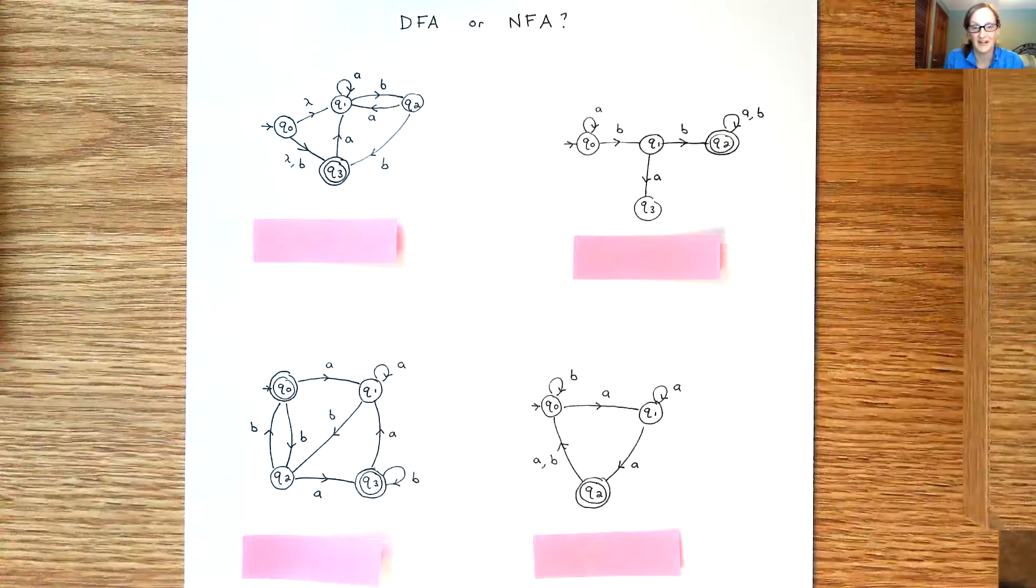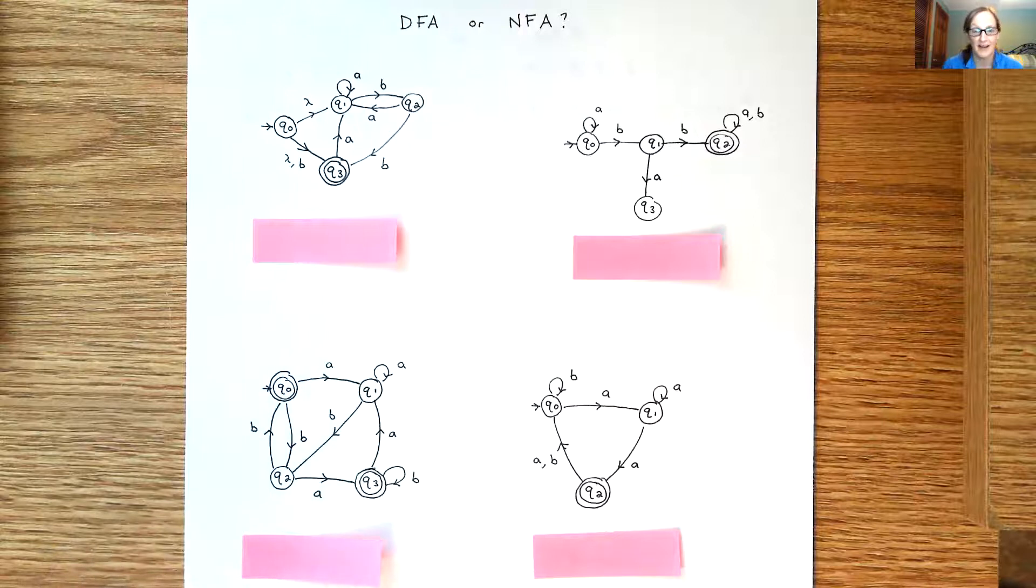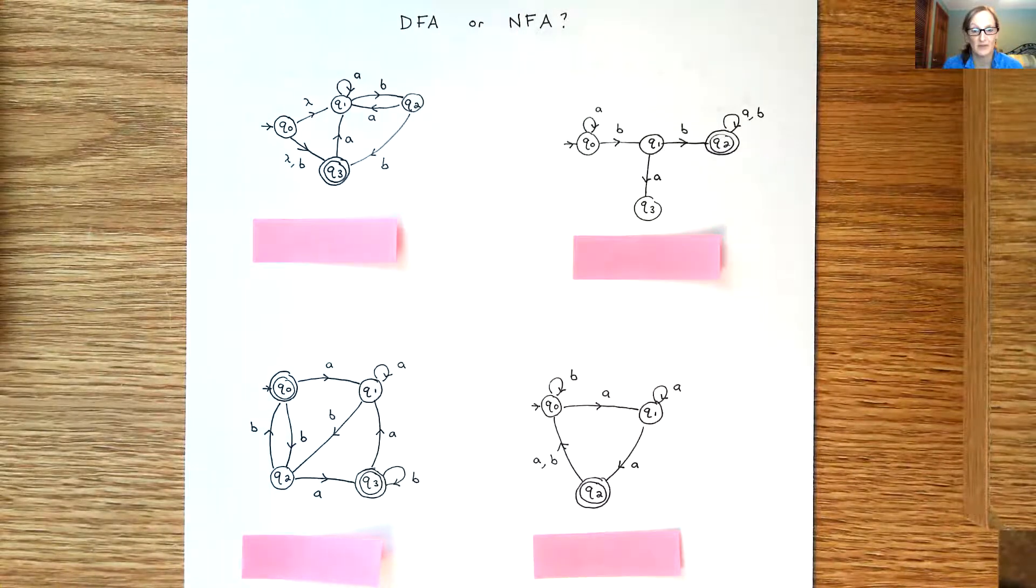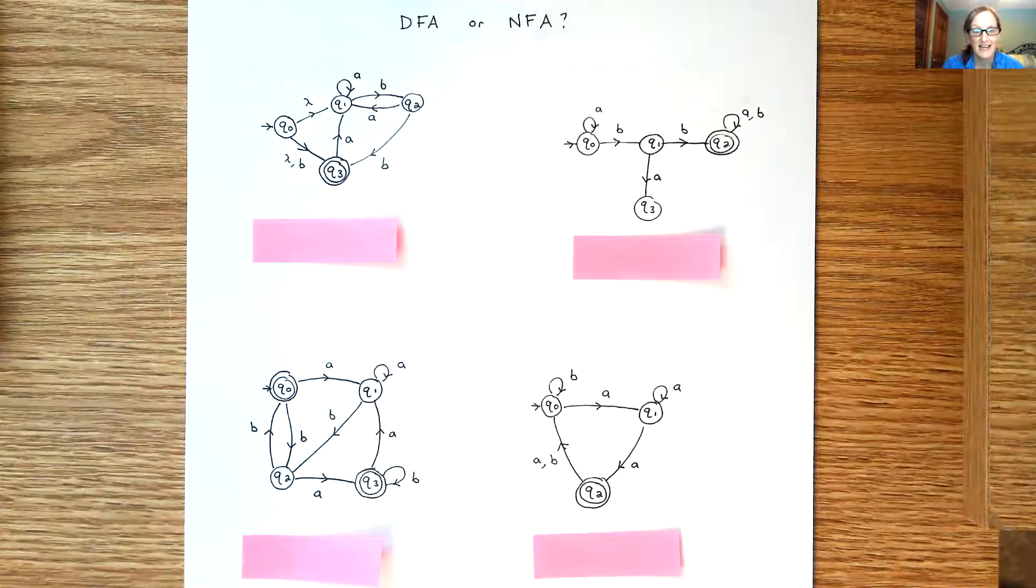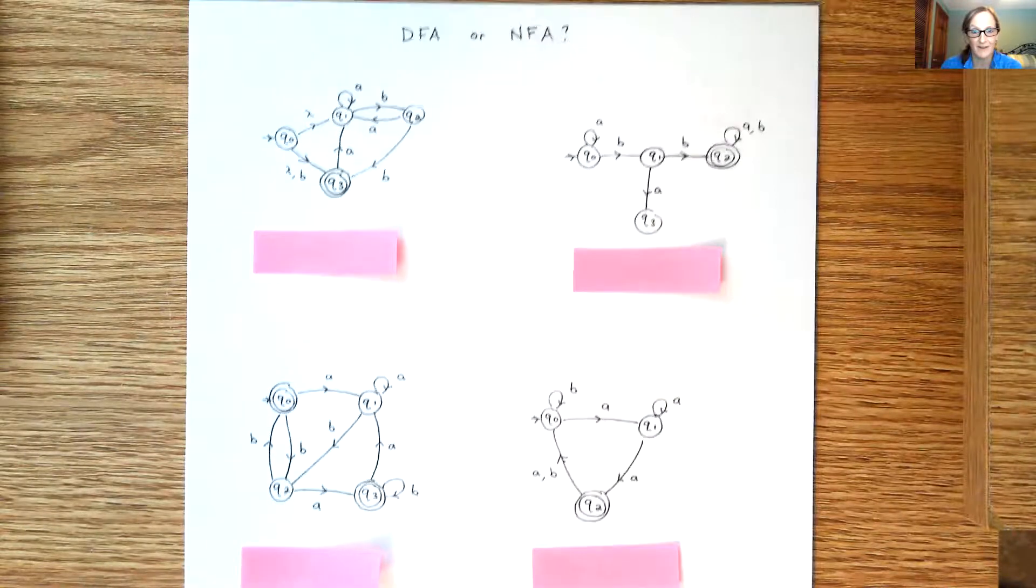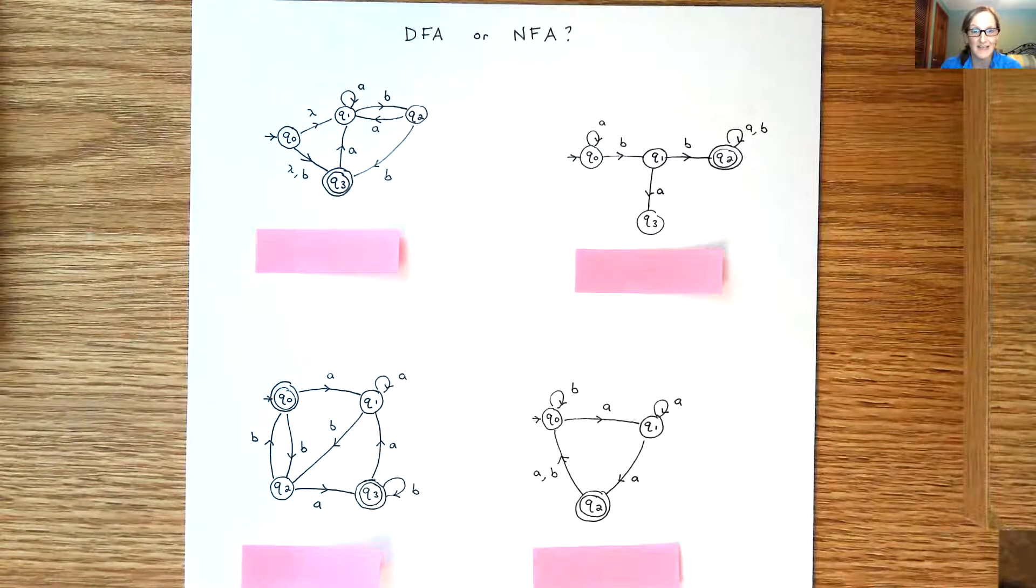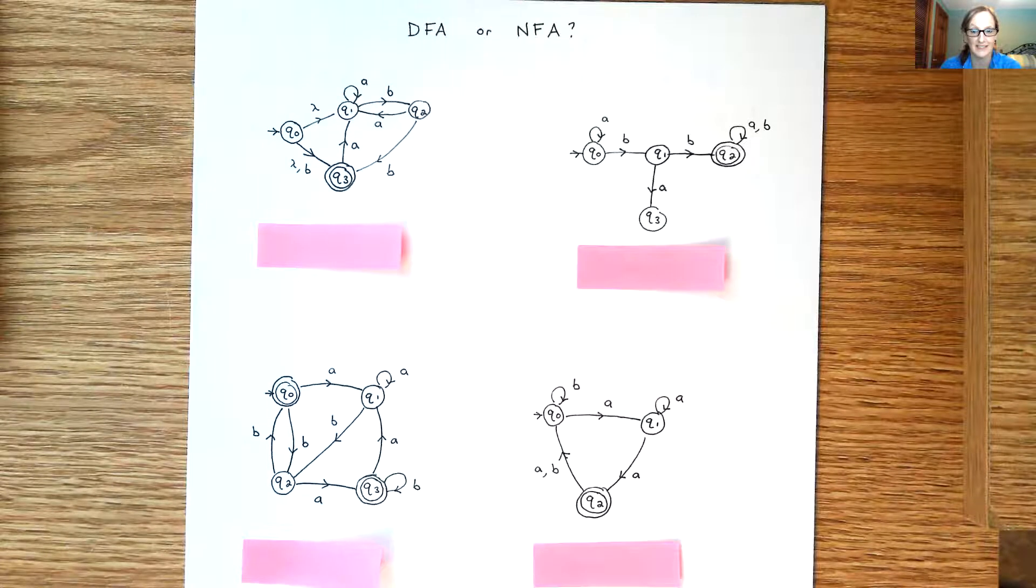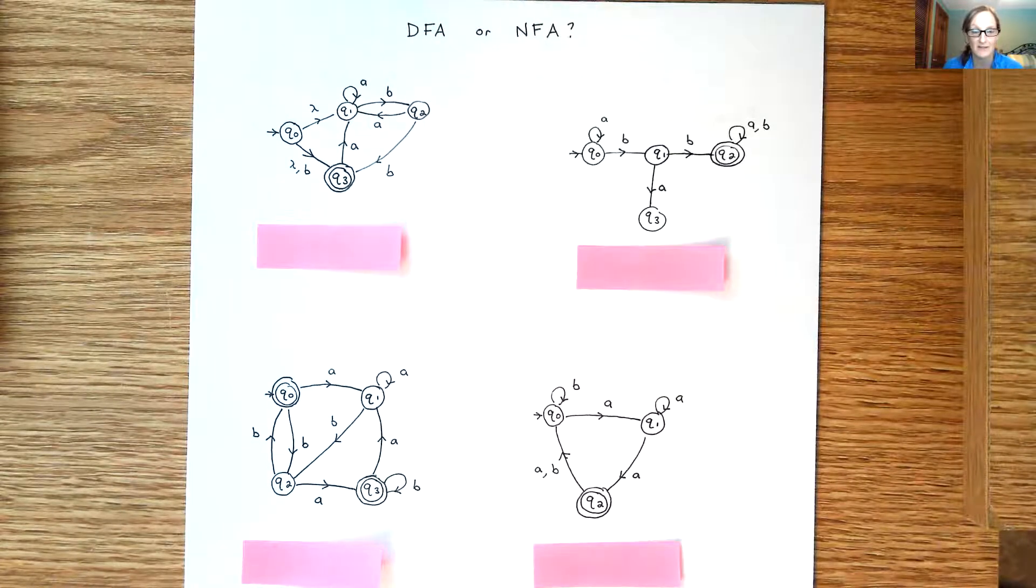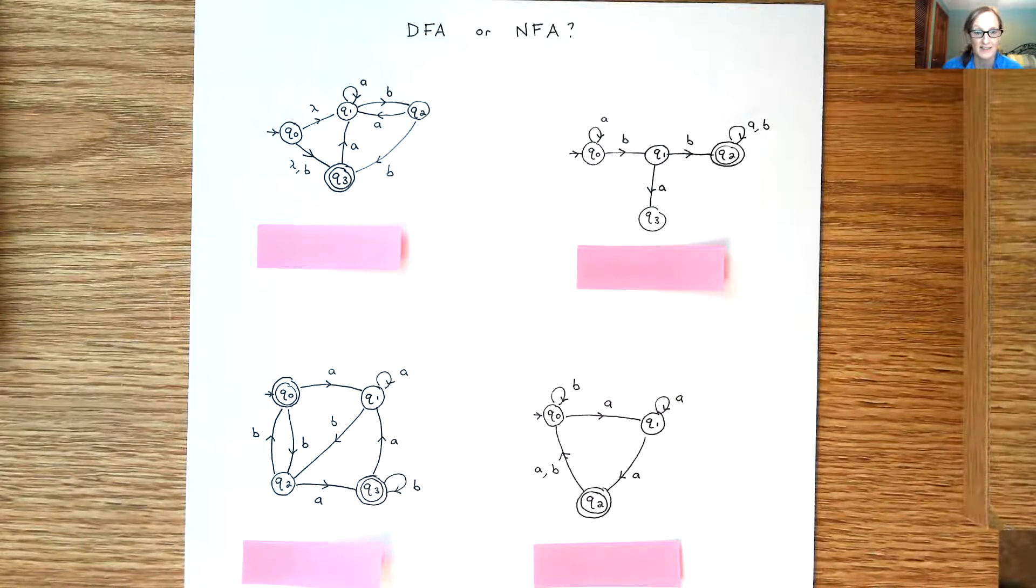The first one I want to do is really basic, just reviewing the difference between a DFA and an NFA. So here's what I want you to do: I have four examples of finite automata and I want you to just take a second and figure out whether each one of these is a DFA or an NFA. Go ahead and pause the video and then we'll go over the answers in just a second.